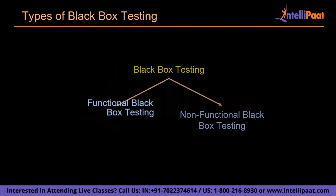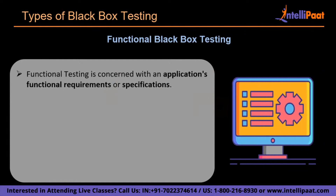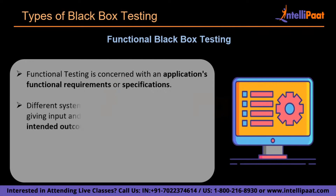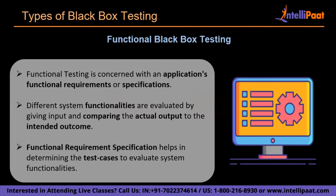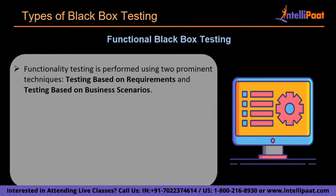Functional black box testing is concerned with an application's functional requirements or specification. Different system functionalities are evaluated by giving input and comparing the actual output with the intended outcome. For example, when we test a drop-down list, we click on it and see if it expands and displays all anticipated parameters. This acceptable behavior is specified in the functional or requirement specification — a document that specifies what a user is authorized to do. Functionality testing is performed using two prominent techniques: testing based on requirements and testing based on business scenarios.